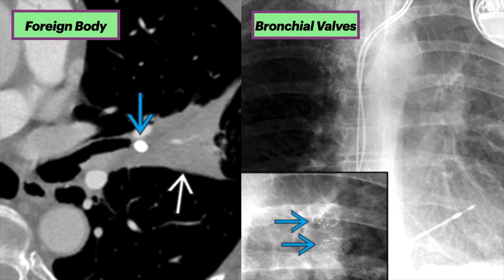Let's move on to endobronchial obstruction. On the left is a foreign body in this elderly individual who aspirated a dental filling. He presented with new left upper lobe opacity, showing this metallic foreign body in the lumen of the superior lingular segmental bronchus and surrounding atelectasis. The right-hand chest x-ray shows a person who underwent volume reduction therapy with bronchial valves, seen on the inset at the bottom, with resultant left upper lobe atelectasis. The bronchial valves act as an obstructing foreign body to achieve volume reduction.